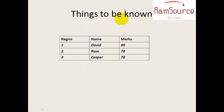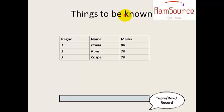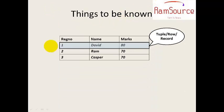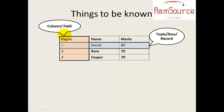Next are things to be known. In a table, the column is called a field. The column as well as the field, along with rows, make up a table.